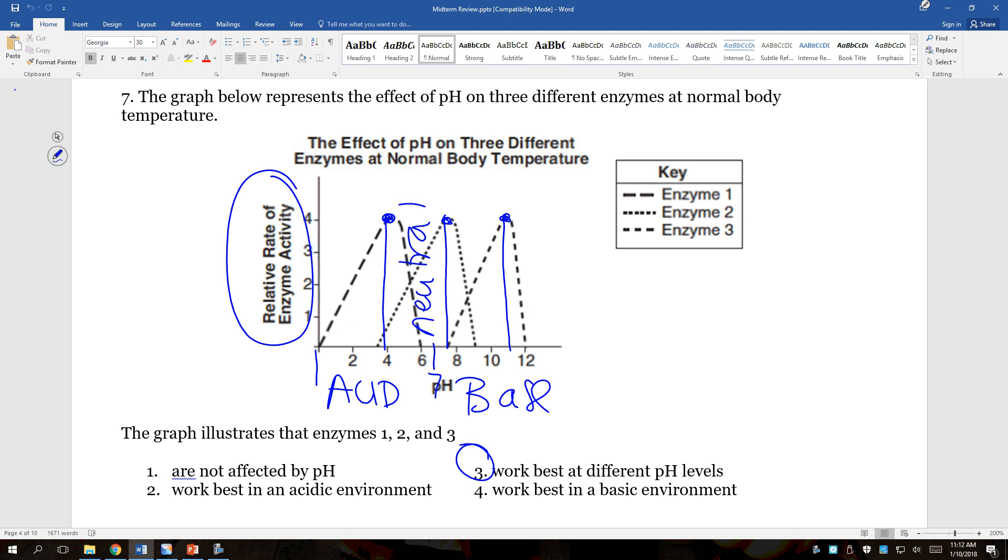Two doesn't make sense there because it says it works best in an acidic environment. No, really, enzyme one works best in an acidic environment. And then the last one says works best in a basic environment. No, really, only enzyme three is working best in the basic environment.